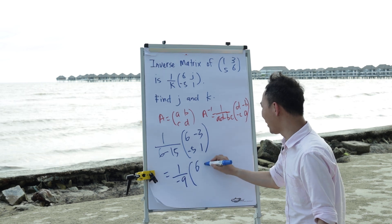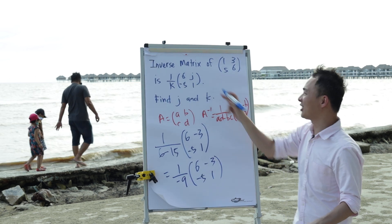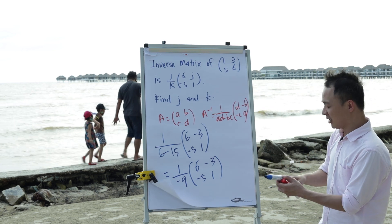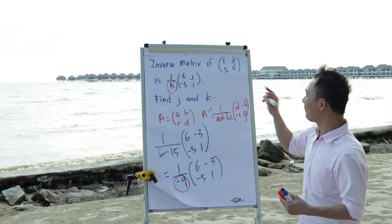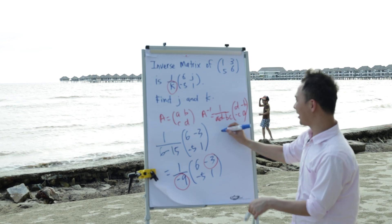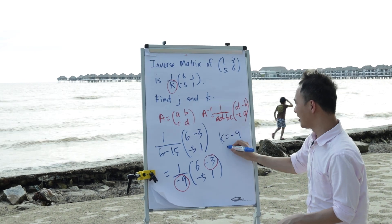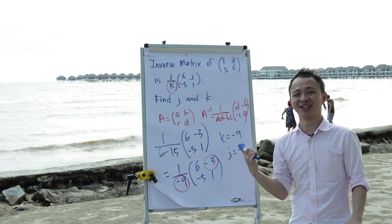And then this will be my final answer. But the question asked me to find k and j, so I will just compare positions. If I compare carefully, k will equal negative 9, and j will be equal to negative 3. So I can easily write k equals negative 9, j equals negative 3. This is how easy we solve the inverse matrix. Thanks.